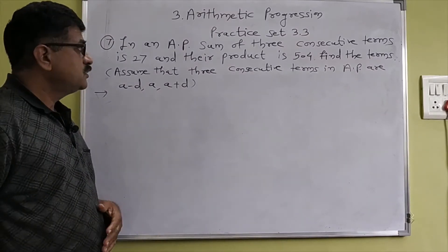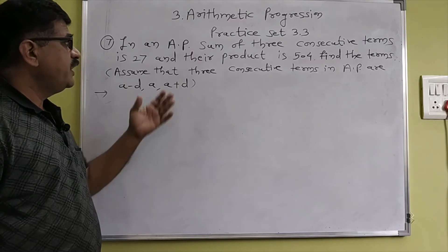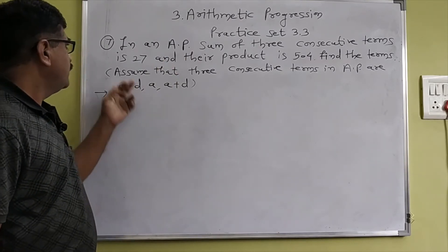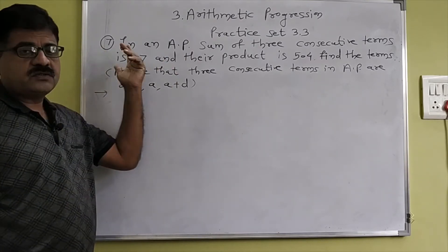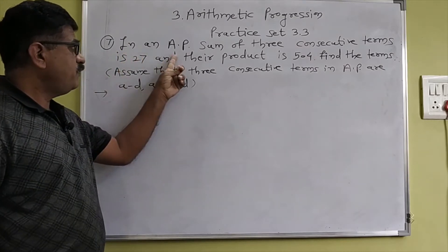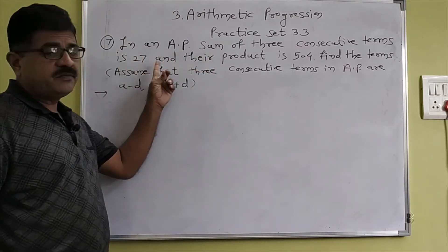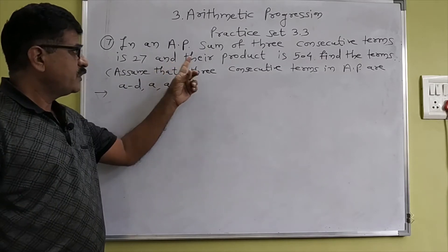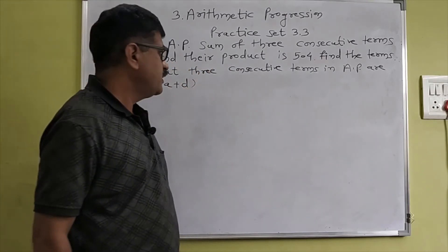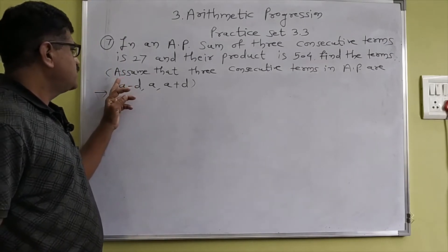Hello students. Today we see some more examples in practice set 3.3, that is question number seven. In an AP, the sum of three consecutive terms is 27 and their product is 504. Find the terms.